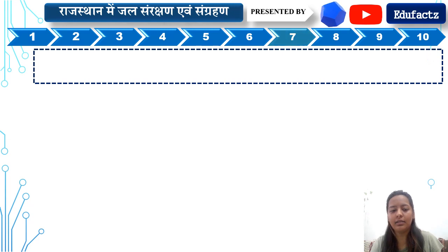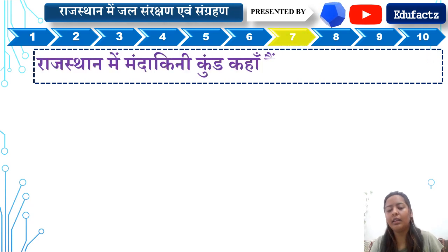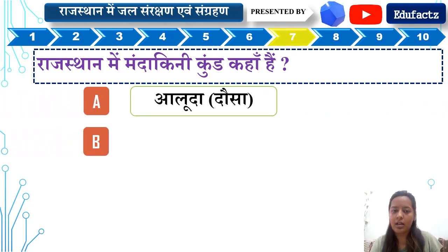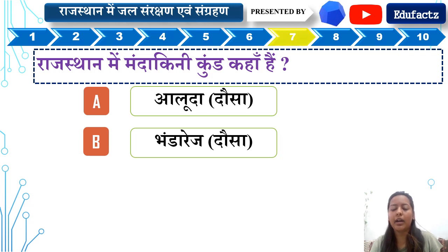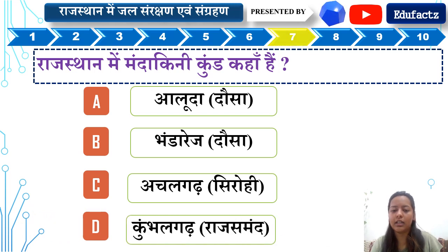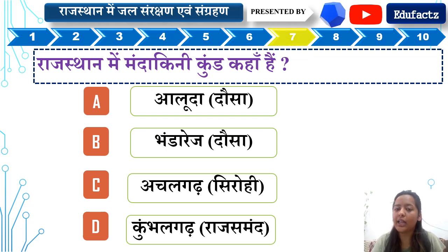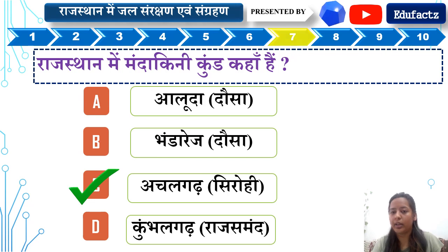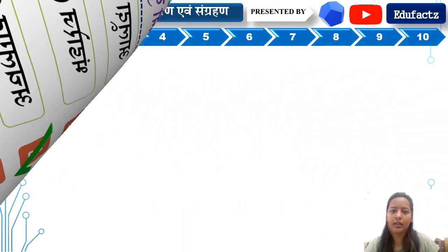Question 7: Rajasthan mein Mandakini Kund kahan hai? A — Alunda Dosa, B — Bhandrej Dosa, C — Achalgarh Sirohi, D — Kumbhalgarh. The right answer is Option C — Achalgarh, Sirohi.